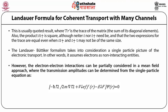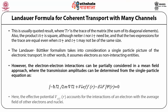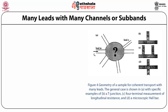Let us now discuss the case of many leads with many channels or subbands. This figure shows the geometry of a sample for coherent transport with many leads: panel A shows a specific example, panels B, C, D show a four-terminal measurement of longitudinal resistance, and panel D shows a microscopic Hall bar.